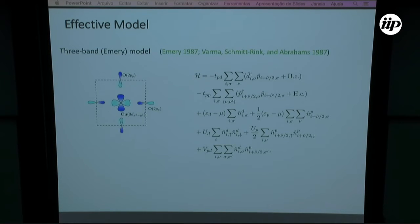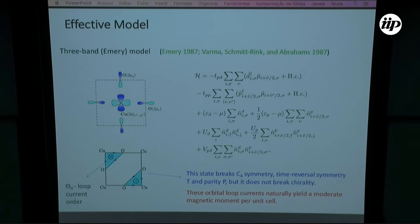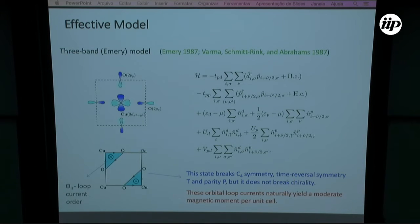A minimal model that describes this time reversal symmetry breaking evidence is the three-band Emery model proposed by these four authors. When you solve this model, one can show there is a ground state where there is a charge flow around these triangular plaquettes, called the theta-2 loop current order. This state breaks C4 symmetry, so it's a nematic state, and it breaks time reversal symmetry and parity, but does not break chirality.